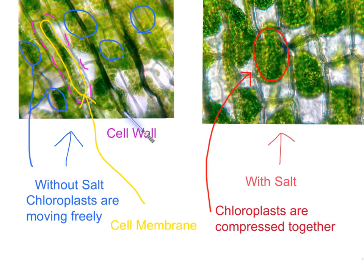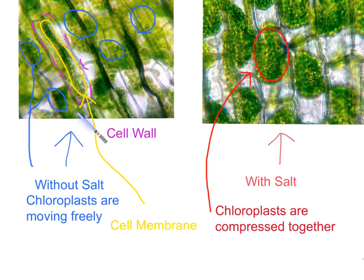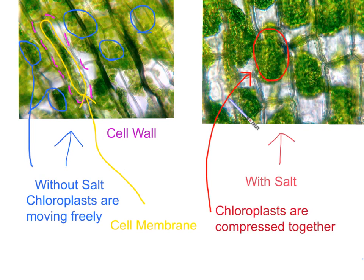Here we have the different parts of the cell, so we're just going to identify them. Here we have a picture from our microscope — this was without any salt water, just normal aquarium water. And here we put it into salt water to examine the changes. First, we're going to show you the different parts of the cell.